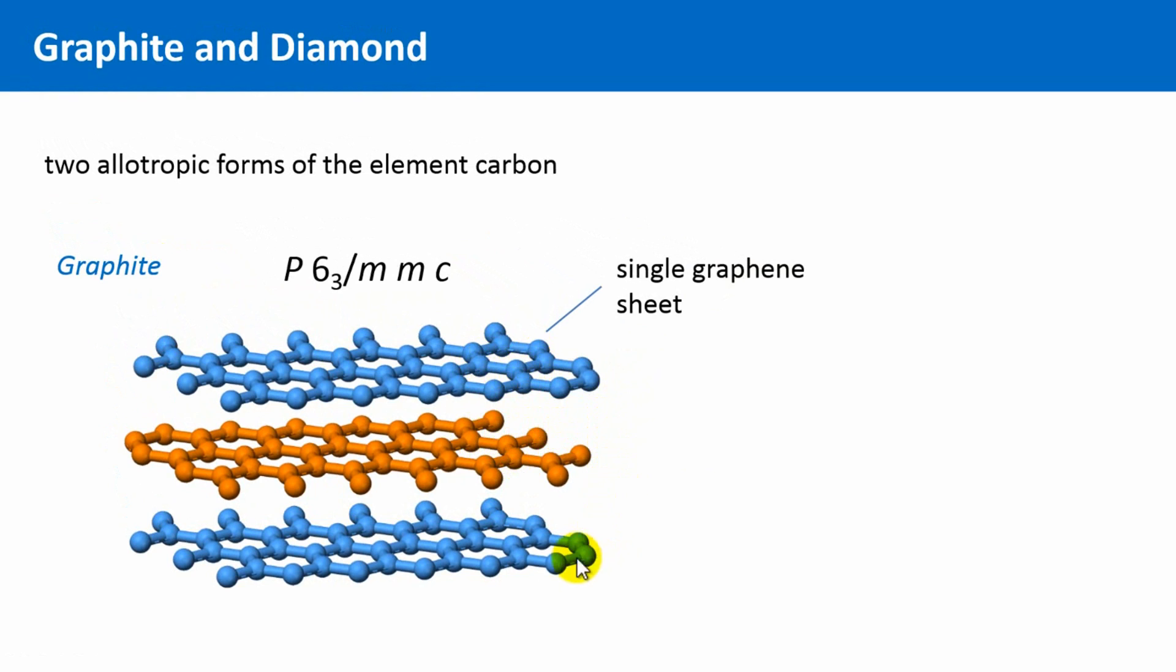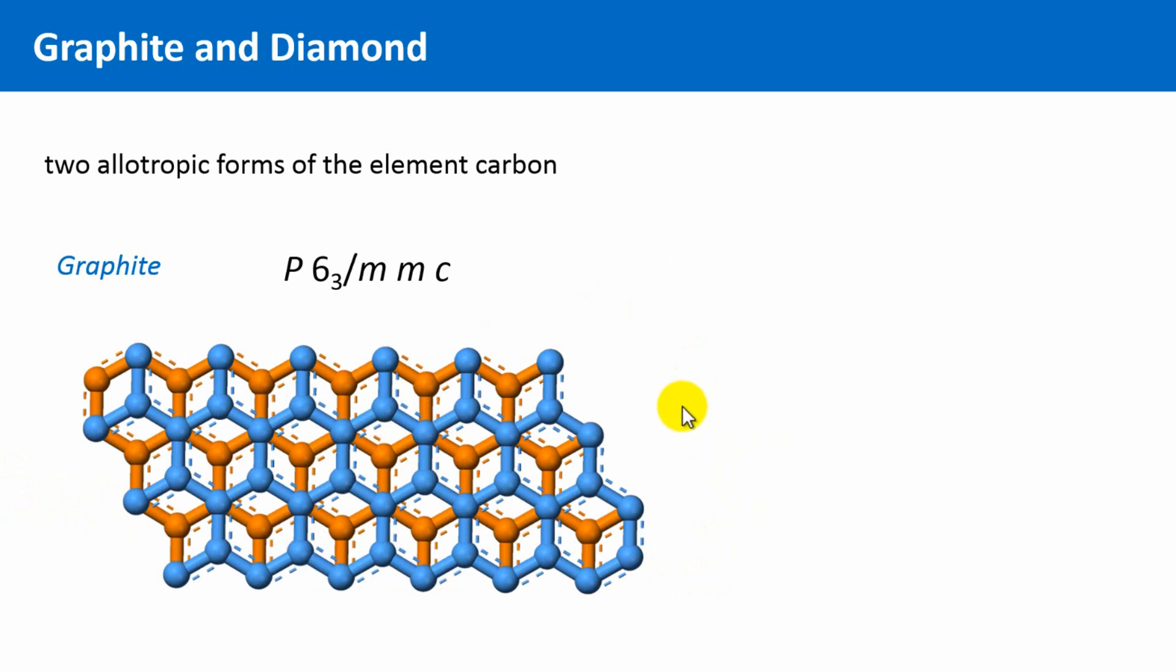These graphene sheets are now stacked along the C direction with a distance of 335 picometers, but not exactly on top of each other, instead with a small offset, so that they build a so-called AB layer sequence, meaning that every second layer is identical. If we looked from above onto two adjacent layers, we would see such an arrangement.